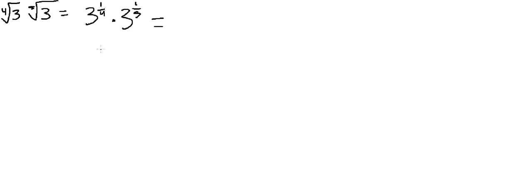Now if you remember, when you have two numbers with the same base and a different exponent, what you're going to do is add the exponents. So the first thing you need to do is get a common denominator, and that's going to be 20.